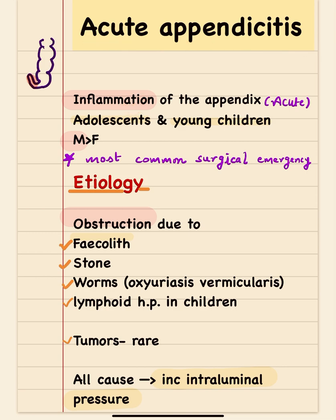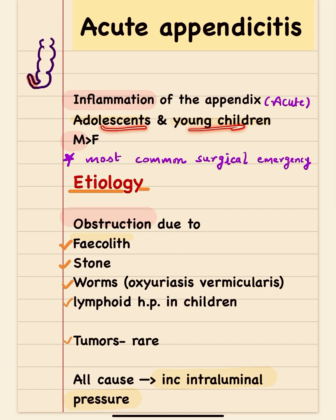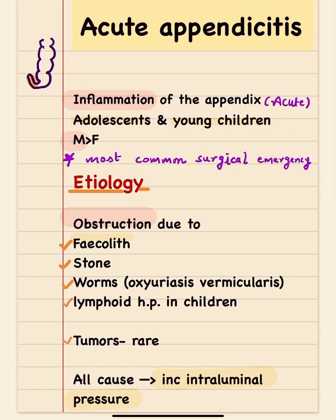Acute appendicitis is the most common surgical emergency encountered, where a young child or adolescent commonly presents with acute abdomen. It is more common in males. You have to remember this scenario for a possible problem-based question. The etiology for acute appendicitis is mainly obstructive.